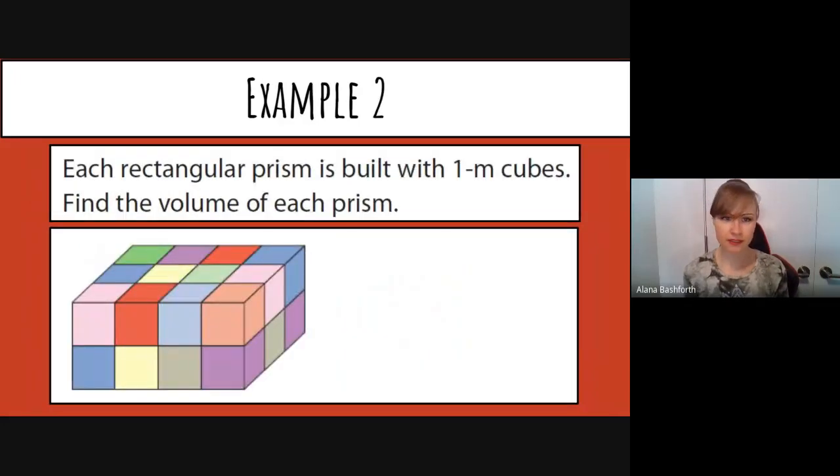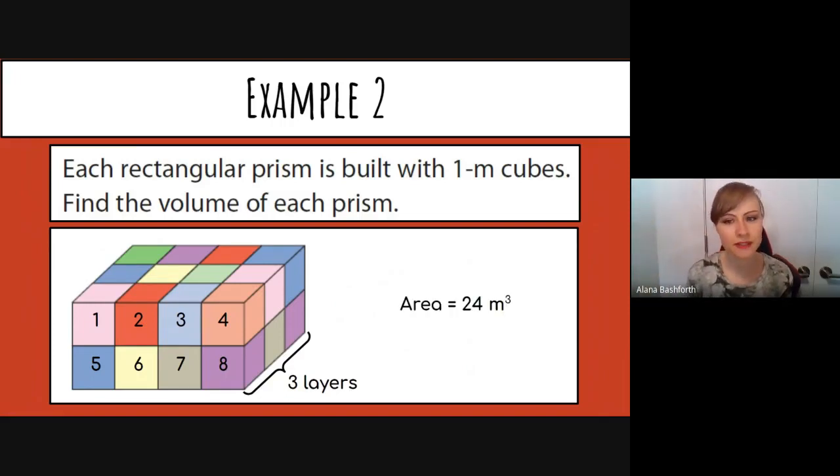This one is built with one meter cubes. So these are like the big suckers, like this is really big. Find the volume of each prism. We do the exact same thing though, we just have to put a different unit after. So we've got eight cubes at the front, meter cubes at the front, and how many layers are there? There's one, two, three layers if you look on the side. So that means that our area is 24 meters cubed because eight plus eight is 16 plus another eight is 24.